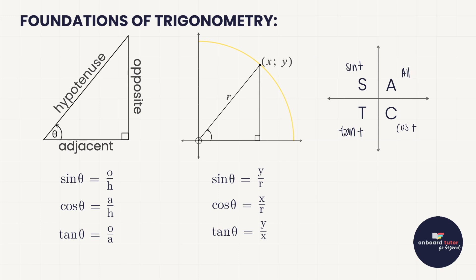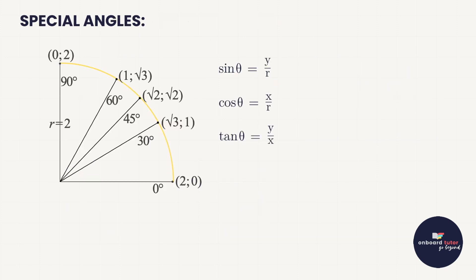We also saw that certain angles always produce the same values for sine, cos, or tan — those are called special angles, which we need to memorize because we'll be asked to solve things without a calculator. There are two ways to work with special angles: the fan diagram, which many teachers use, or special angle triangles. What's important is that you immediately recognize that 30, 45, and 60 degrees are special angles.